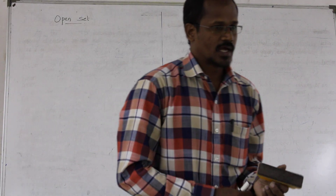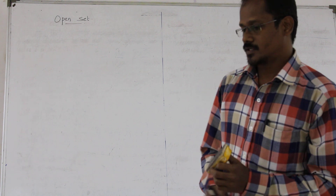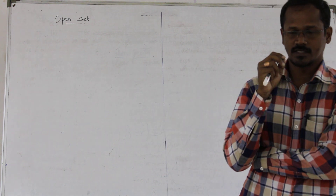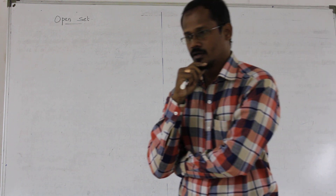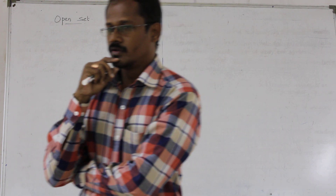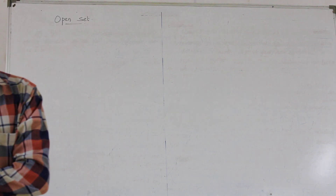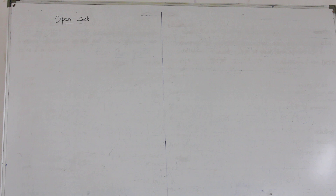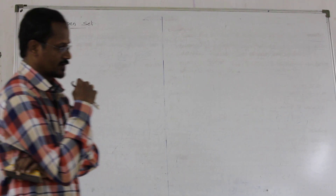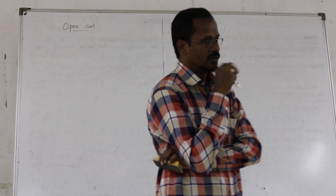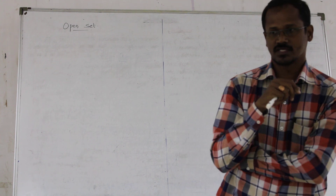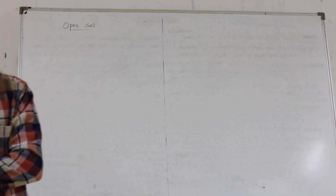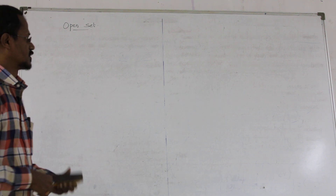Good morning students. In the last two videos we went through the definition of an open ball centered at a point with radius r, and with that we defined what is meant by the interior of a given set A in a metric space X. Now with the help of these two definitions, we are able to define what is an open set in a metric space.